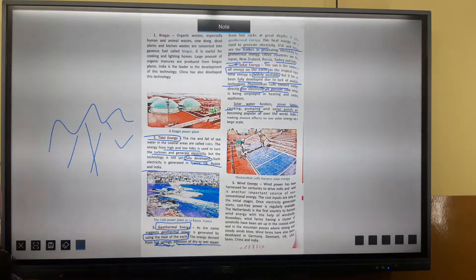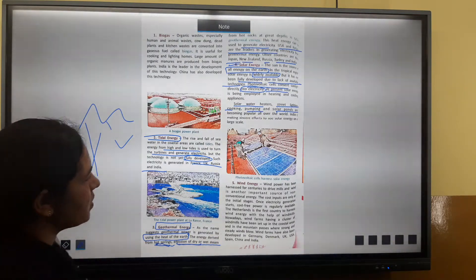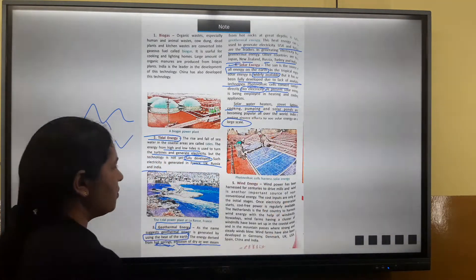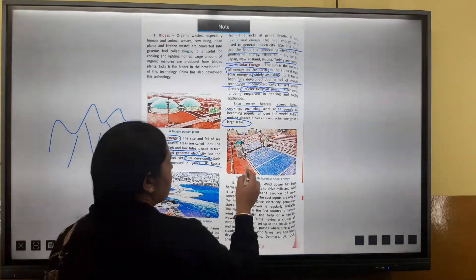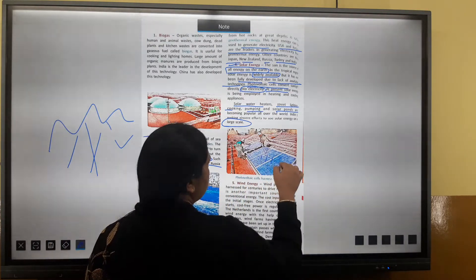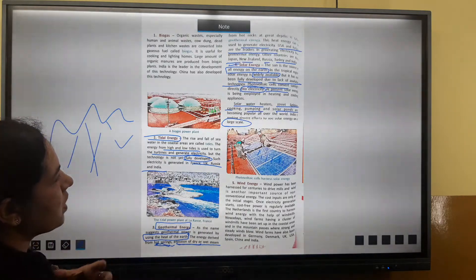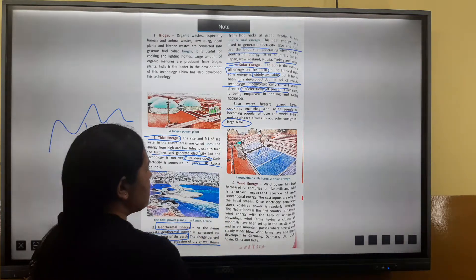India has made good efforts in solar energy production. Photovoltaic cells generate solar electricity by directly observing sunlight.